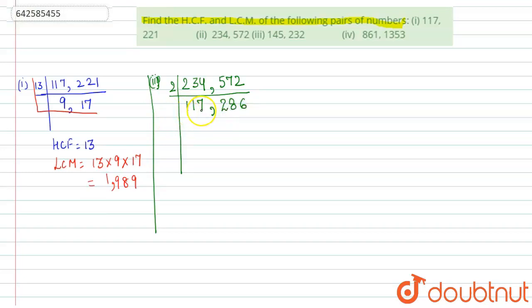Again, we know 117 is a multiple of 13 from the previous question, so we can check whether 286 is a multiple of 13 or not. Yes it is, so we can take out 13 as the prime factor outside. We get 9 and we get 22.